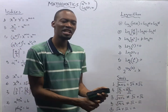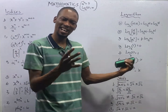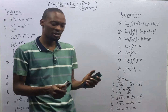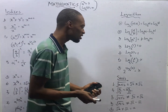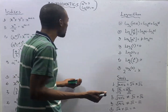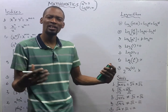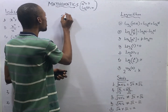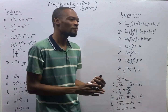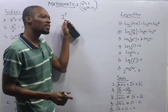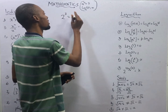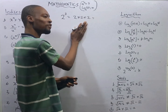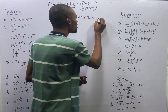Let's take a look at the beautiful relationship between indices and logarithm. What is indices in the first place? Indices has to do with how many times a number is multiplied — it has to do with powers and exponents. Any time you are given a number with a power, that indicates indices. If you have 2 raised to the power of 3, this equals 2 × 2 × 2, which is 8.